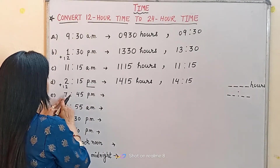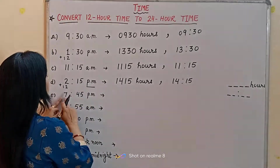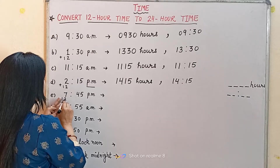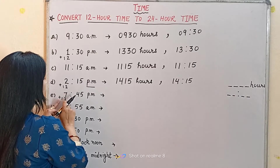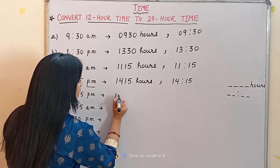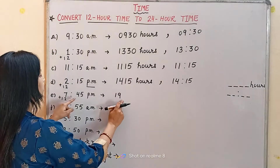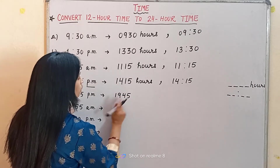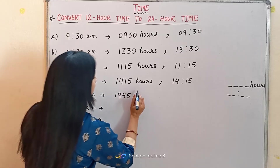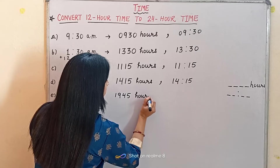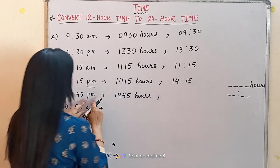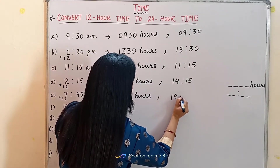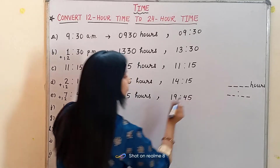The next example is 7:45 PM — again it is PM, so we will add 12. 7 plus 12 is 19, so we write 1945, then 'hours'. The second way: we write 19, put the colon, and write 45 minutes. So it is 19 hours 45 minutes.